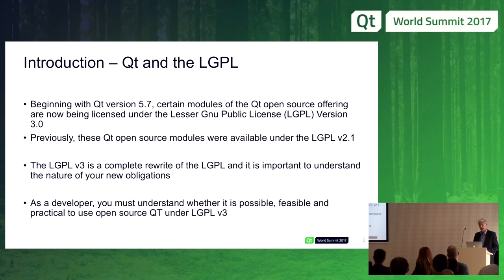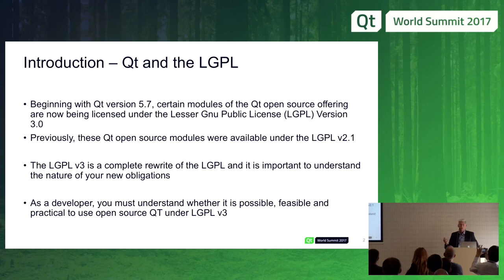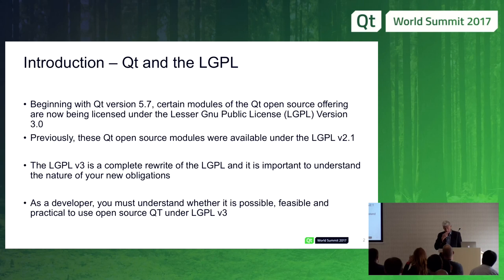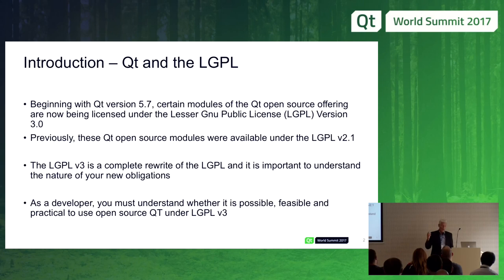As many of you know, when Qt released version 5.7, Qt moved from the LGPL 2.1 license to the LGPL version 3 license for many — if not most — of its open source products. LGPL 3 is a complete rewrite of the LGPL license, and as a developer, as a product manager, as a company offering these products, you need to know: is it feasible, is it practical, to comply with your obligations under the LGPL license?